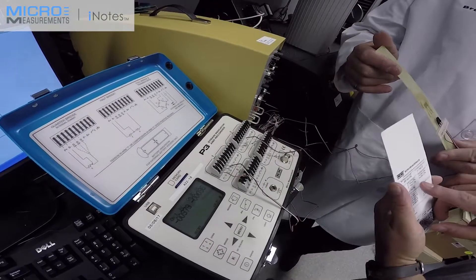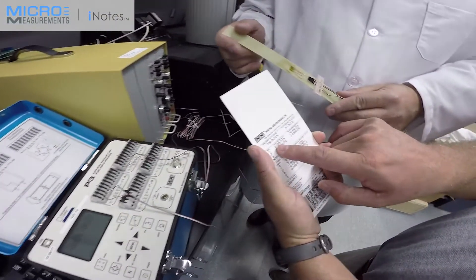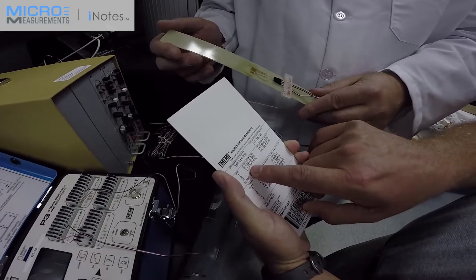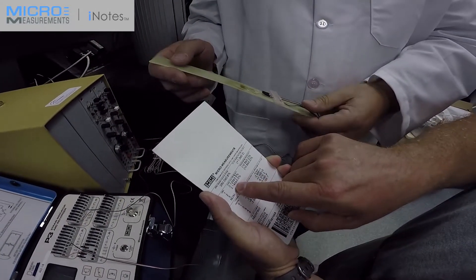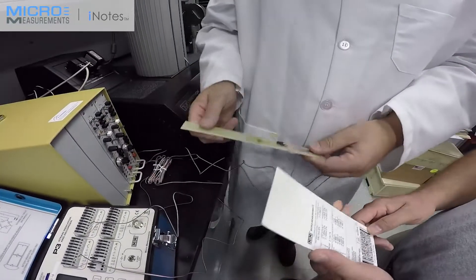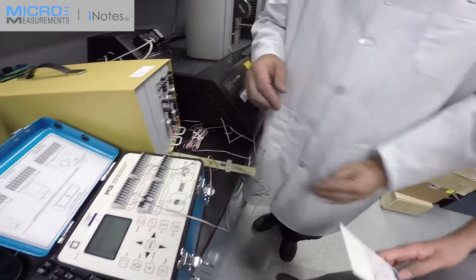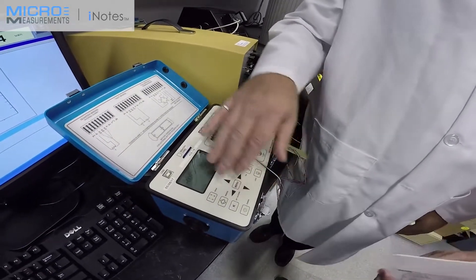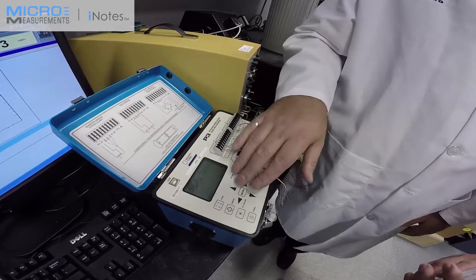And it looks like the gauge factor for grid one, the transverse is 2.12 and then for the axial grid is 2.14. So I'm guessing you can put that into the P3, correct? In the P3, basically, we have to define channels, bridges, type, and also the scaling. And then we can just start the recording.